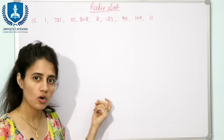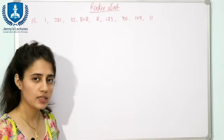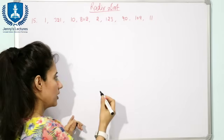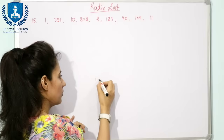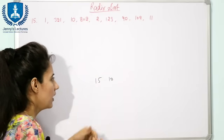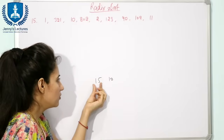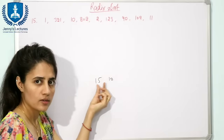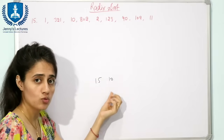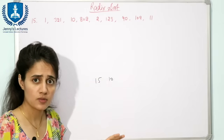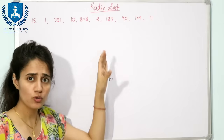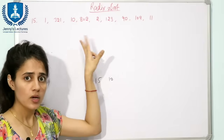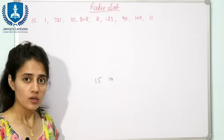In this algorithm, the numbers are not compared like we have done in other sorting algorithms. For example, if I take 15 and 10, I'm not going to compare whether 15 is greater than 10 and then do swapping. We are not going to do any comparison between the numbers here.